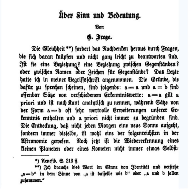Frege developed his original theory of meaning in early works like Begriffschrift of 1879 and Grundlagen (Foundations of Arithmetic). On this theory, the meaning of a complete sentence consists in its being true or false, and the meaning of each significant expression in the sentence is an extralinguistic entity which Frege called its Bedeutung — literally meaning "significance", but rendered by Frege's translators as reference, referent, meaning, nominatum, etc.